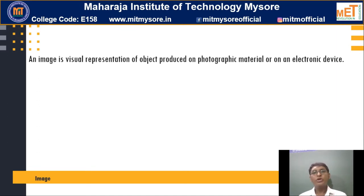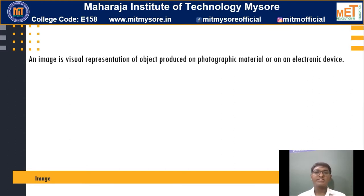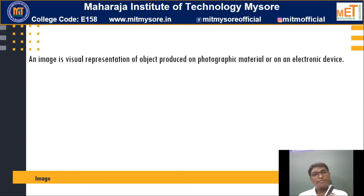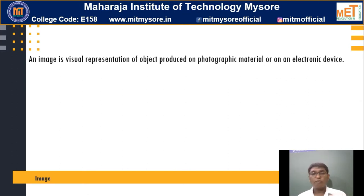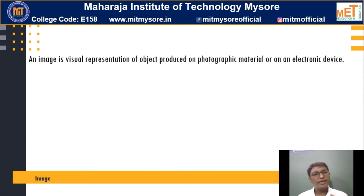An image is a visual representation of any object that is produced on a photographic material. Whenever you take a selfie or a picture of your parents or friends, that object you are going to capture is a photographic material. Or it might be on an electronic device like the cameras of your mobile phone, laptops, or webcam. Whatever picture is captured by these devices, that is your image.